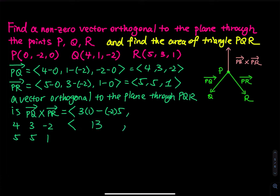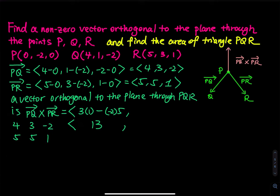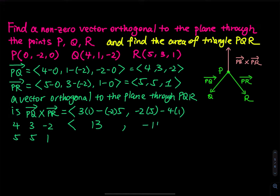And then the next component: we will box these two. We have negative 2 times 5, and then minus 4 times 1. Let me double check: negative 2 times 5 minus 4 times 1, which is negative 10 minus 4, which equals negative 14.